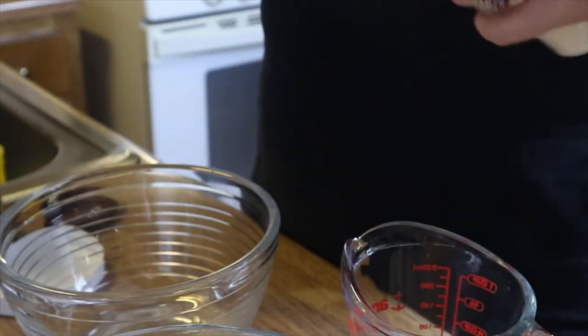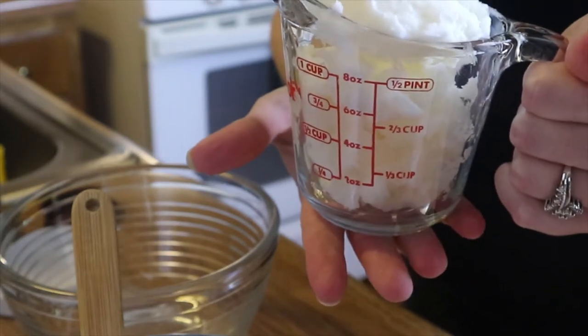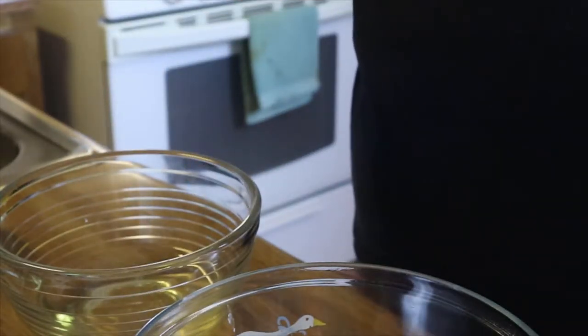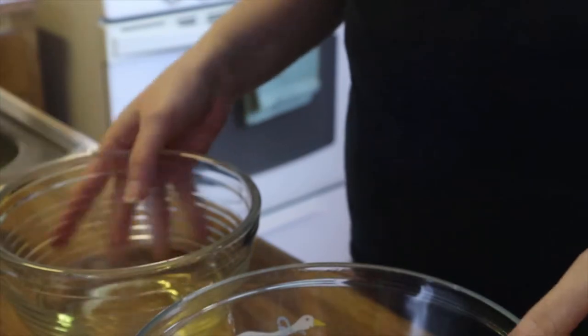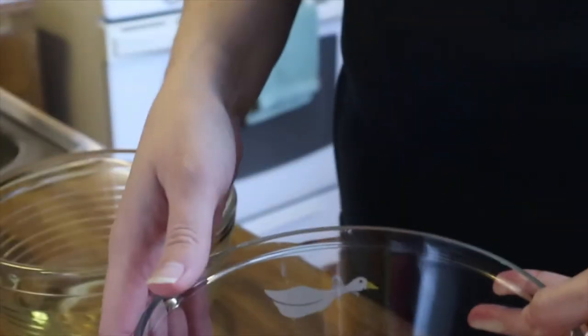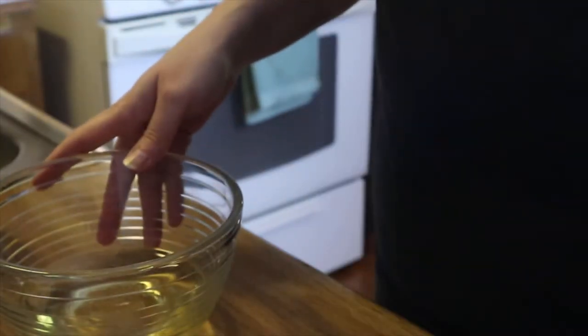What you're going to do first is you're going to take your coconut oil and you're going to measure out one cup. Now we're just going to melt this in the microwave for about 30 seconds or just until it's melted. After your coconut oil melts, you're going to divide it into two bowls. I've got three-quarter cup in my smaller bowl and I've got one-quarter cup in my larger bowl. This is just going to help us later, so you're just going to set the one-quarter cup of coconut oil aside.